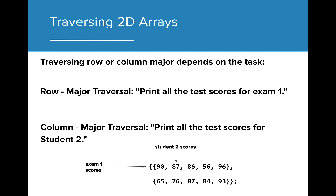Traversing using Row or Column order can depend on the task that is being completed. For example, if we wanted to print all the test scores for Exam 1, it would make more sense to do a Row traversal so as to get all the values for the first exam. And if we wanted to print all the test scores for an individual student, it would make more sense to use Column Major traversal to access that student's data across all exams.